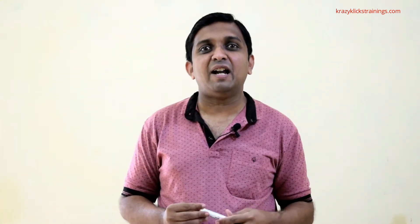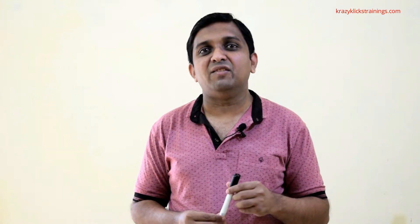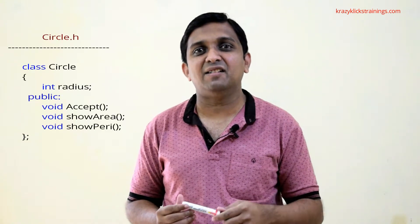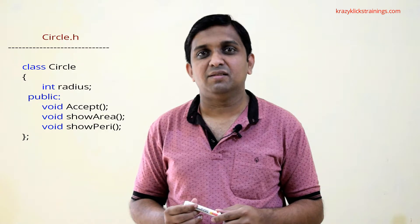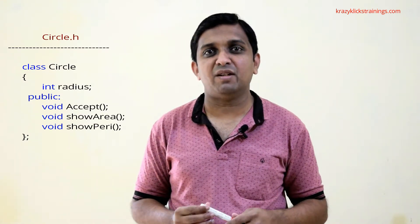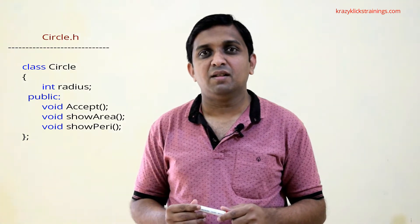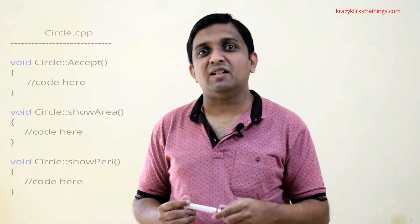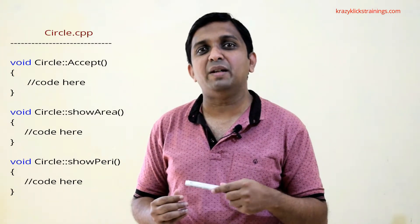So what are the contents of the header file and what are the contents of the .cpp file? The header file will contain the declaration for the class. For example, circle.h will declare the class circle with its data members and member functions. Then circle.cpp, the source file, will contain the definitions of the member functions of the circle class.